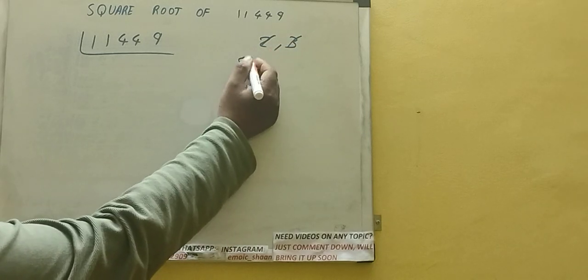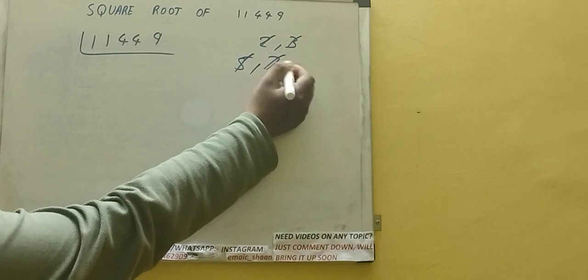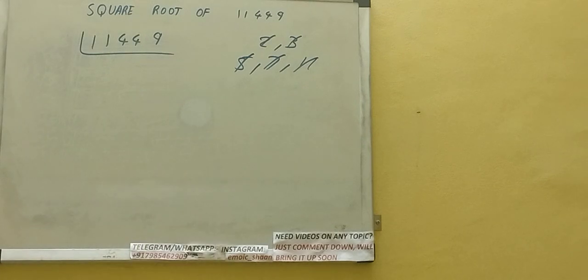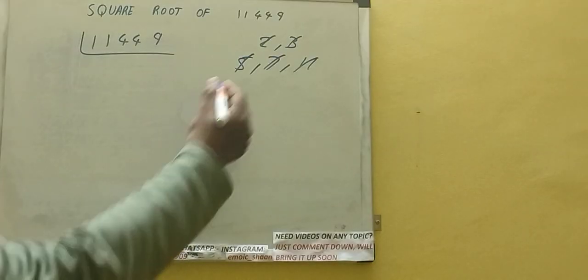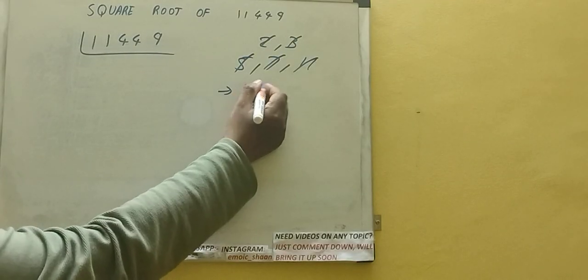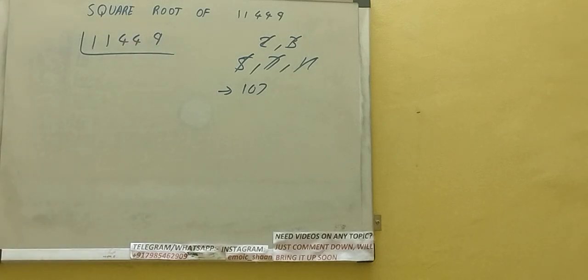So if you go on checking with the next one, that is 5, then 7, then 11, you go on checking, you will reach the number 107, which will divide 11449. Now it would take time, so to save your time I directly went to that number, but when you will be solving, it will take some time to reach that number.